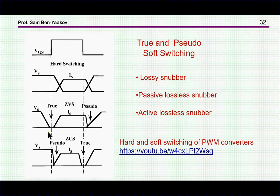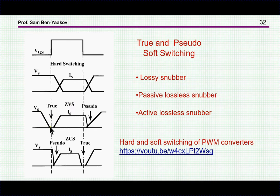One can reduce these losses by using so-called soft switching. By soft switching we mean managing to separate the two waveforms — current and voltage — from each other. In a perfect case, the voltage first goes down completely and only then the current goes up, so there is no overlap whatsoever. This is true zero voltage switching (ZVS). There is also a quasi-ZVS approach where we delay the rate of rise of the voltage, thereby reducing or minimizing the overlap.